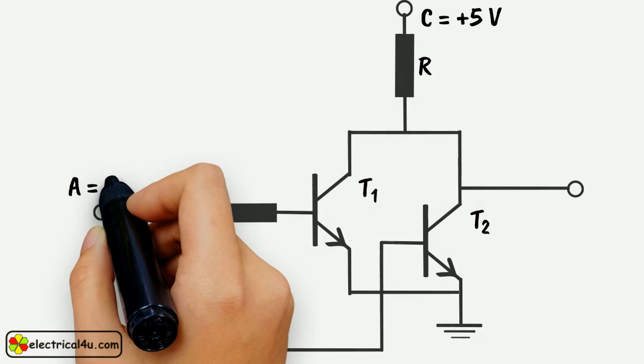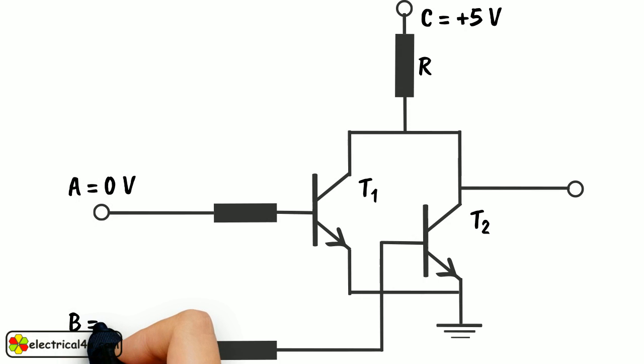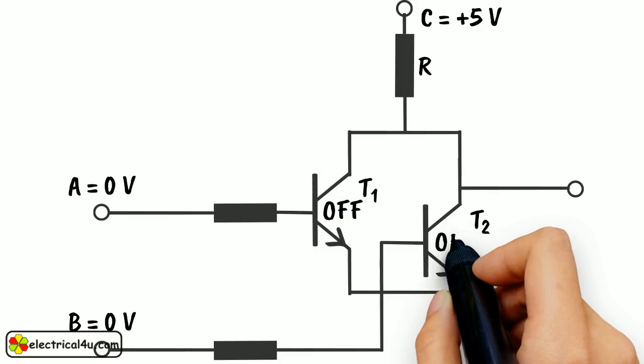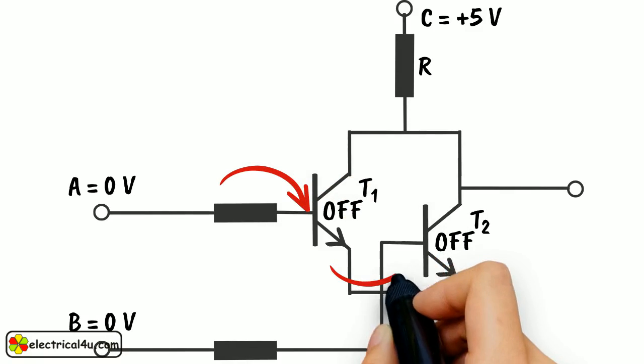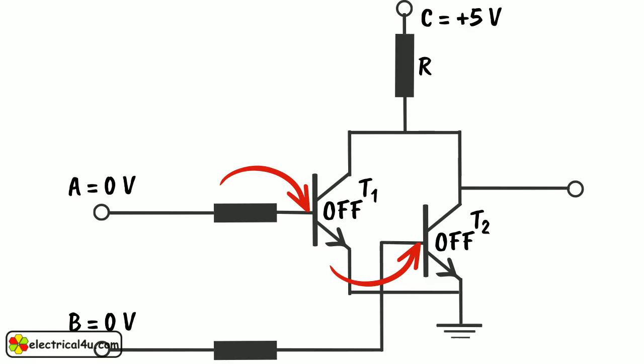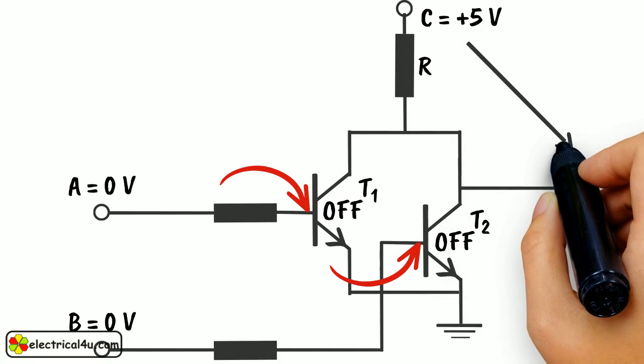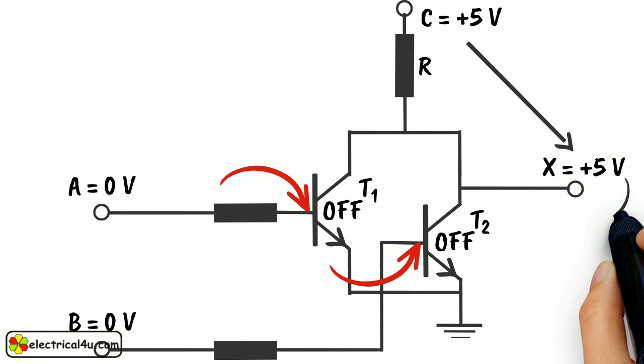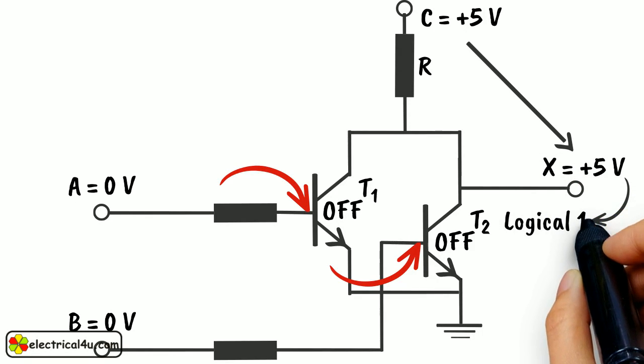Now if both of the inputs A and B are given with 0V or grounded, both transistors will be in OFF condition. As in this case, the base of both transistors does not have enough potential to make the transistors ON. As the supply voltage will not get any path to the ground, the supply voltage will appear at output X. Hence, output is in logical 1 or high state.